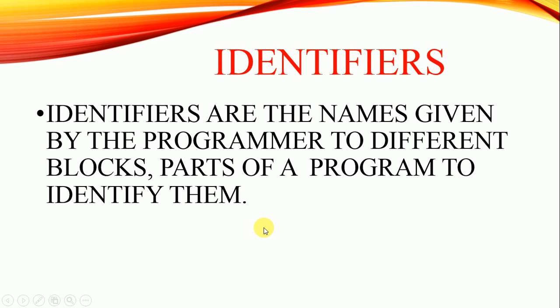Identifiers are the names given by the programmer to different blocks or parts of the program to identify them. For example, name of a variable, name of a function, name of a class, array, etc. are identifiers.